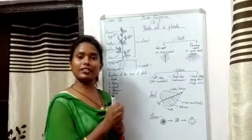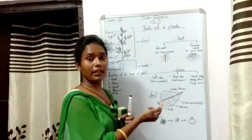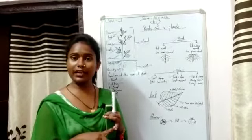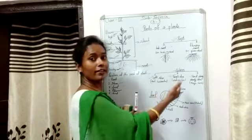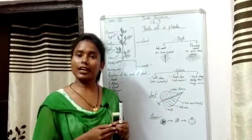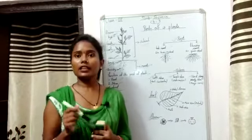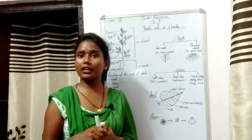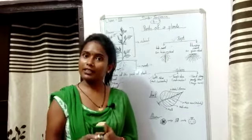Now, what are the functions of the stem? As mentioned earlier, roots absorb water and minerals and pass them to the stem, and the stem carries those minerals and water to other parts of the plant. Another function of the stem: cactus plants found in desert areas do not have leaves, so their stem performs the function of preparing food.